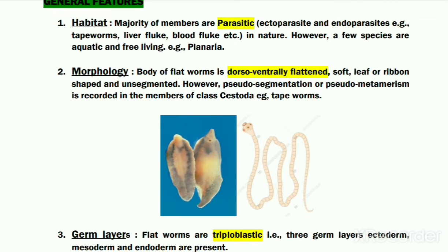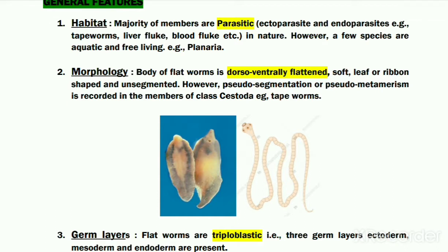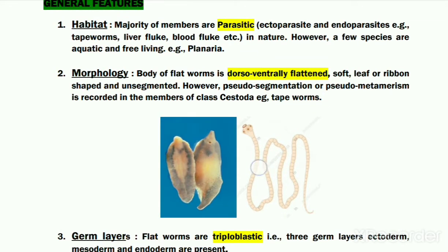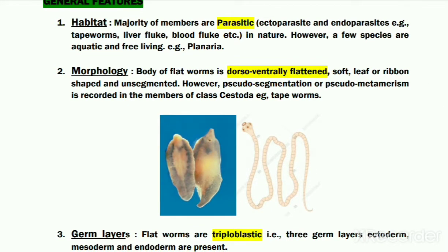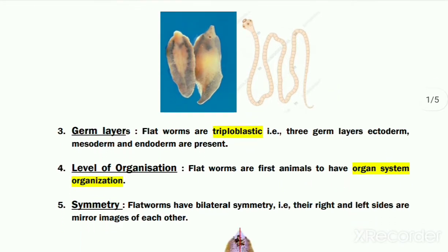The next is their morphology. These organisms have a dorsoventrally flattened body, so they are referred to as flat worms. The phylum Platyhelminthes is divided into three classes. The first two classes — class Turbellaria and class Trematoda — have a flat leaf-shaped unsegmented body, for example Fasciola. The organisms of the third class, class Cestoda, are generally referred to as tapeworms. Tapeworms have a long ribbon-shaped segmented body, although these segments are not true segments. This phenomenon is referred to as pseudo-segmentation or pseudo-metamerism.